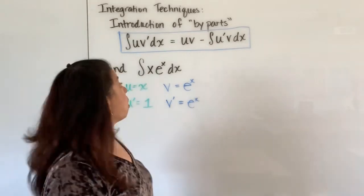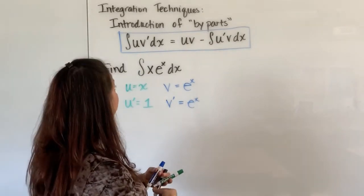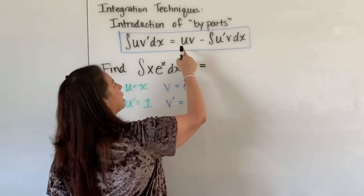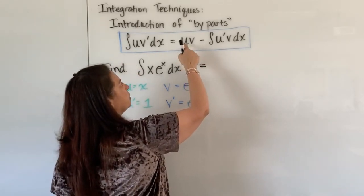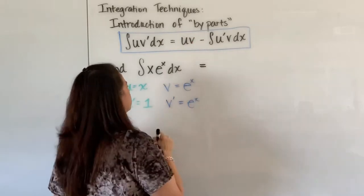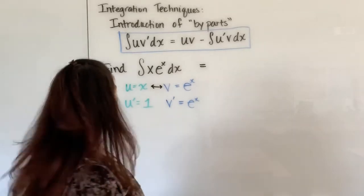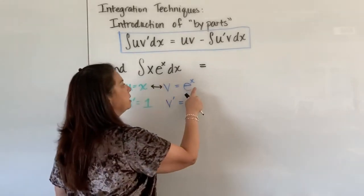So now I know what my u, v, u prime, v prime all are, so now I go back to the problem and I say okay I need to carry on and say according to the formula u times v comes next, so that's these parts here that get multiplied together so I have an x times an e to the x.